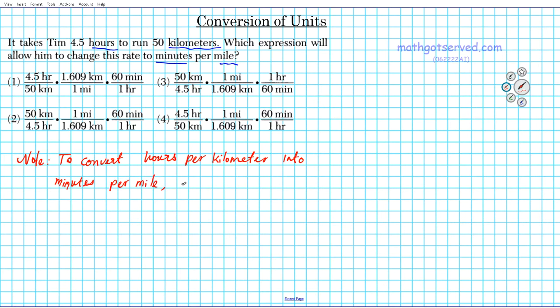What's going to happen is that the units left after a cancellation or reduction should be minutes per mile. So we have four options here.